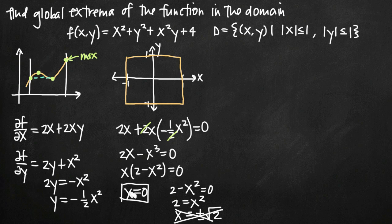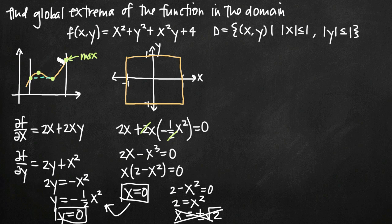I need to find the corresponding y value for x equals zero. Plugging into y equals negative one-half x squared gives y equals zero. So my only critical point inside the square is the point (0, 0). Just like with a single variable function, I plug this point into my original function: f(0, 0) gives x squared is zero, y squared is zero, x squared times y is zero, leaving just four. So f equals 4.